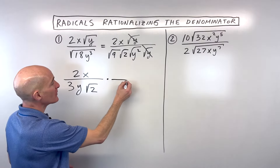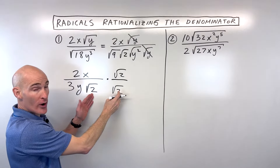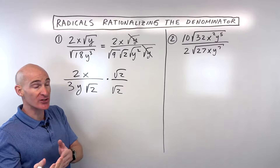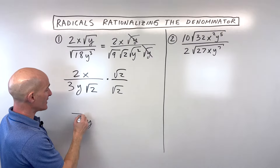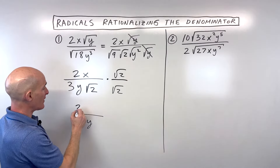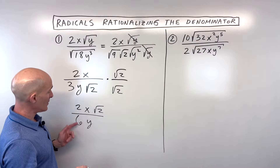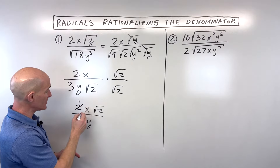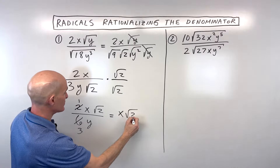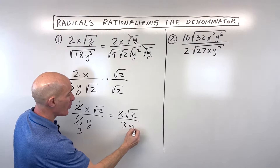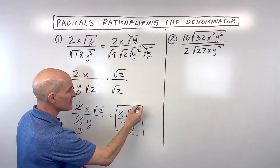So what we're going to do is multiply the numerator and the denominator by the square root of 2. That's going to give us the square root of 4, which equals 2. So the denominator becomes 2 times 3, which is 6y. And in the numerator, we have 2x times the square root of 2. Now notice the 2 and the 6 — we can reduce that further: 2 goes into 2 once, and 2 goes into 6 three times. So the final answer is x times the square root of 2 over 3y. We've gotten rid of that radical in the denominator, and this is in simplified form.